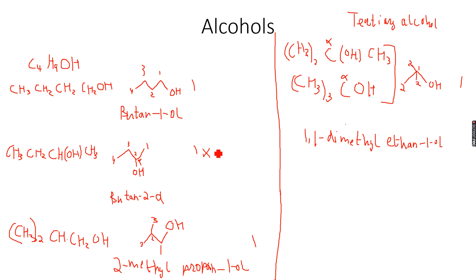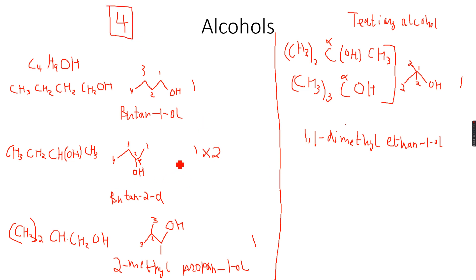So we multiply this by two, because it exists as two isomers. If we are only considering structural isomers there will be four, but if we are considering both structural and stereo isomers, butan-2-ol exists as two stereo isomers, so the total changes. Now let's look at 2-methylpropan-1-ol: no carbon-carbon double bond, so no geometric isomerism. And there is no chiral center, so there is no optical isomerism either.